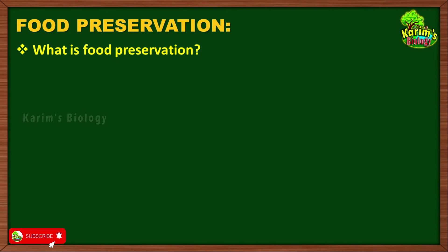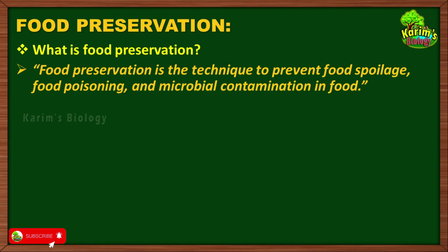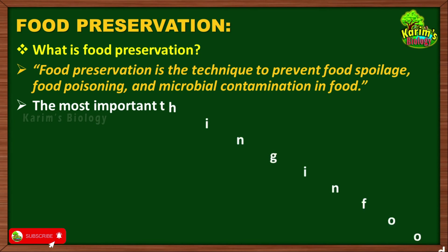Food preservation is a technique to prevent food spoilage, food poisoning, and microbial contamination in food. Since microorganisms — bacteria and fungi — are the reason behind food spoiling and food poisoning, if you want to preserve food for a long time, you must ensure the food is not exposed to microorganisms. If these microbes do not grow on the food, the food can be preserved for a long time. That is the principle behind food preservation.